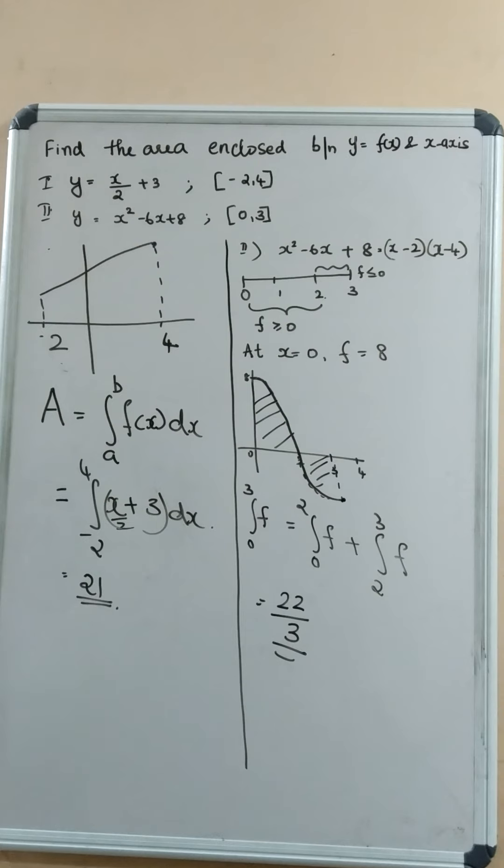So, for the equation, the linear equation, the graph will be a straight line and we have plotted the graph minus 2 to 4.